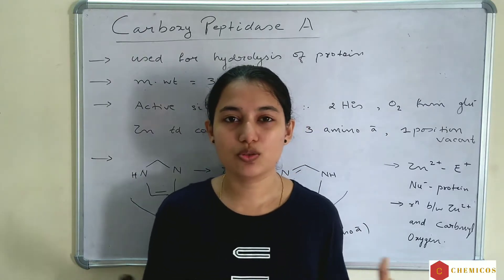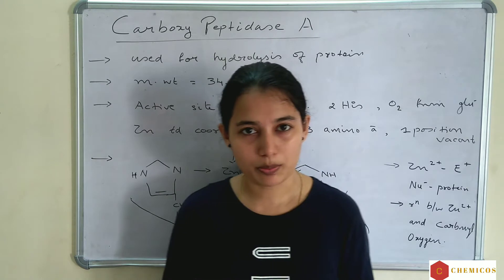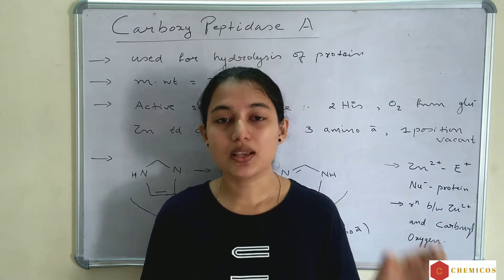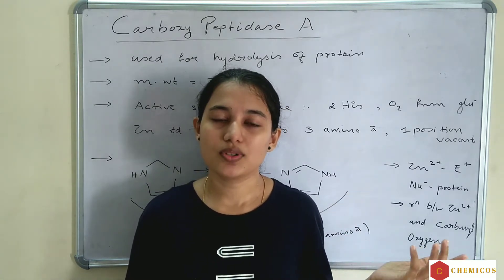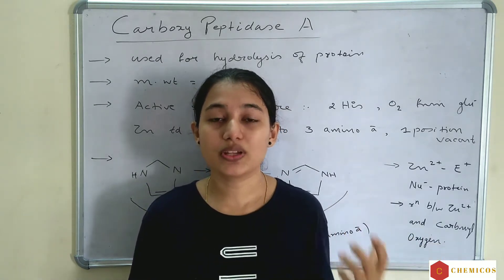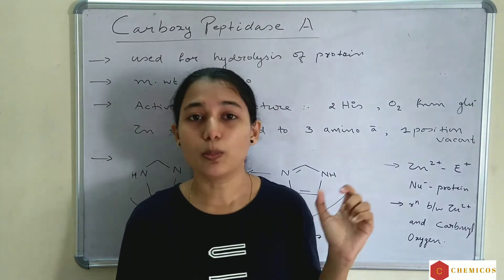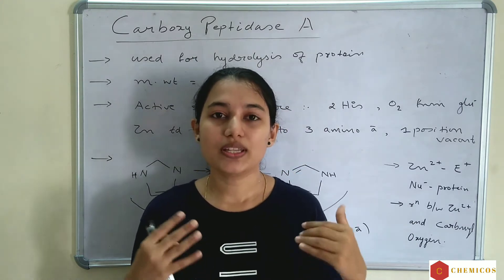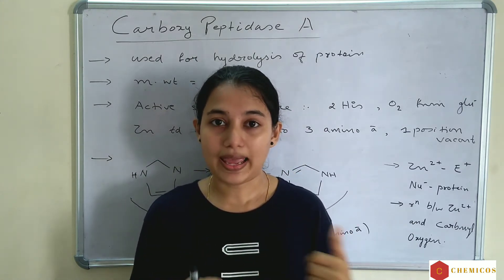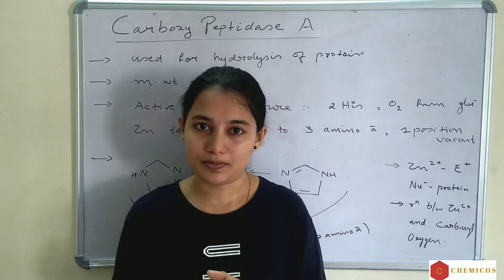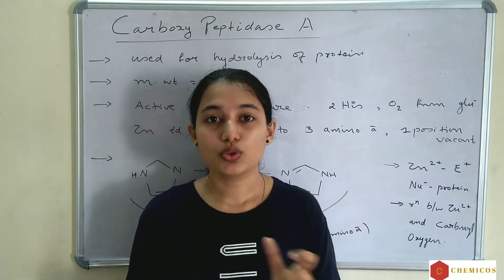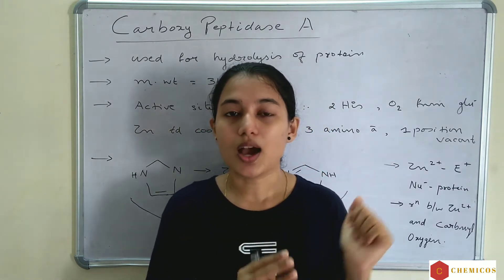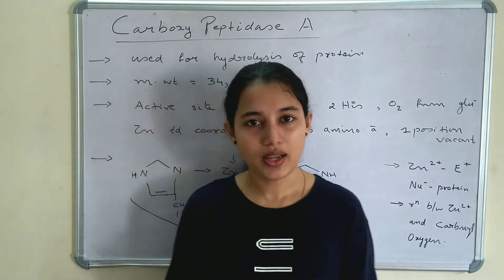Hi everyone, welcome to Imco's Academy. We were discussing bio-inorganic topics and this video is for metalloenzymes. An enzyme is a biological catalyst — a substance which increases the rate of a reaction. Metalloenzymes are biological catalysts which increase the rate of reaction and contain a metal atom. We are going to see two important metalloenzymes: carboxypeptidase A and carbonic anhydrase.